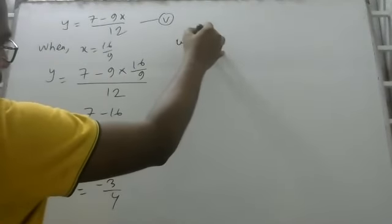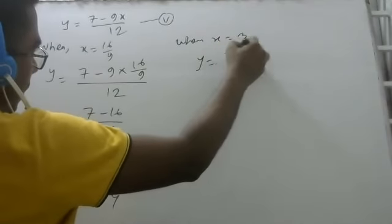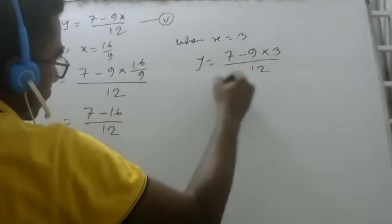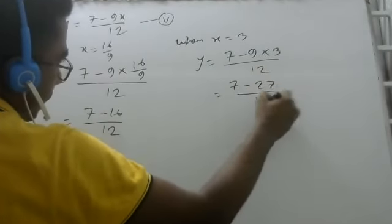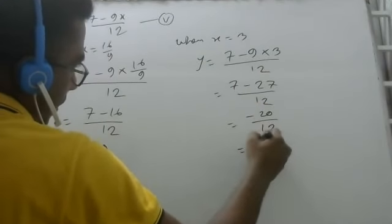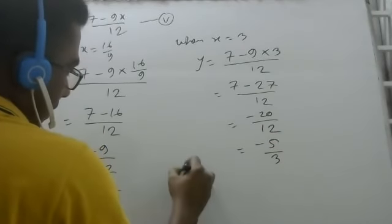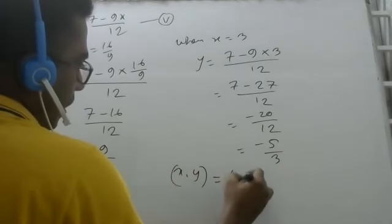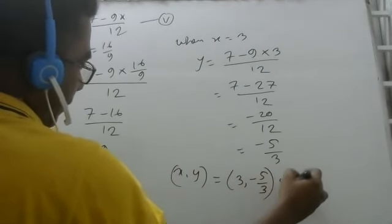When x equal to 3, y equal to 7 minus 9 into 3 by 12. So that gives 7 minus 27 by 12, which is minus 20 by 12, so y equals minus 5 by 3. So the y value, when x is 3, is minus 5 by 3.